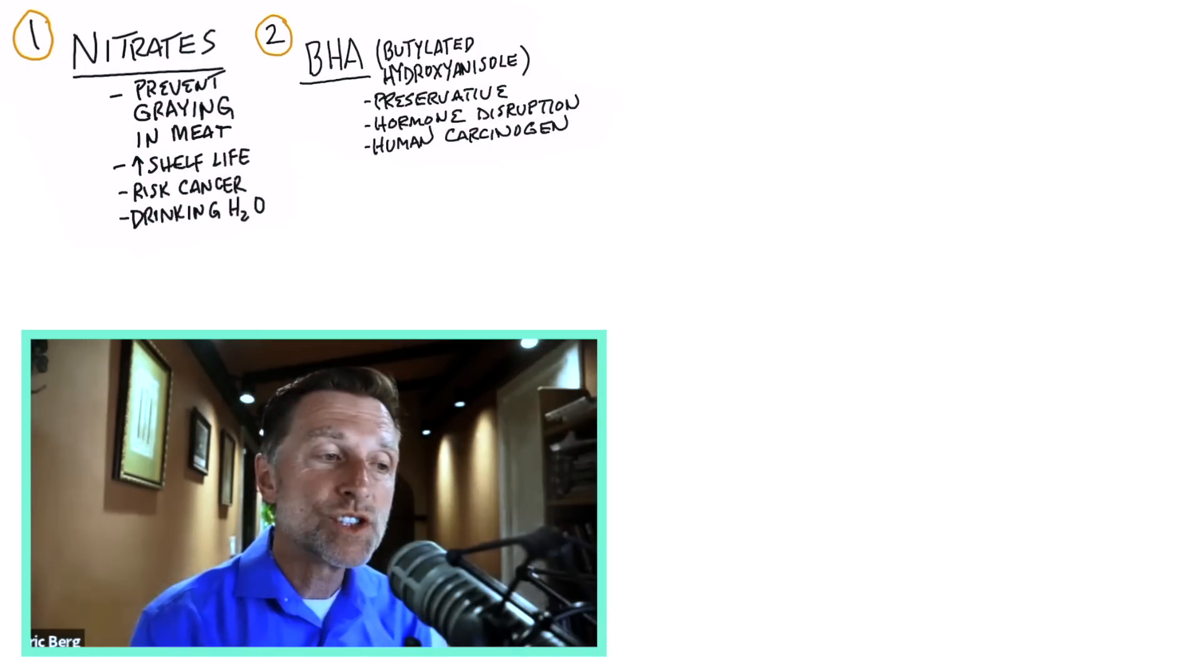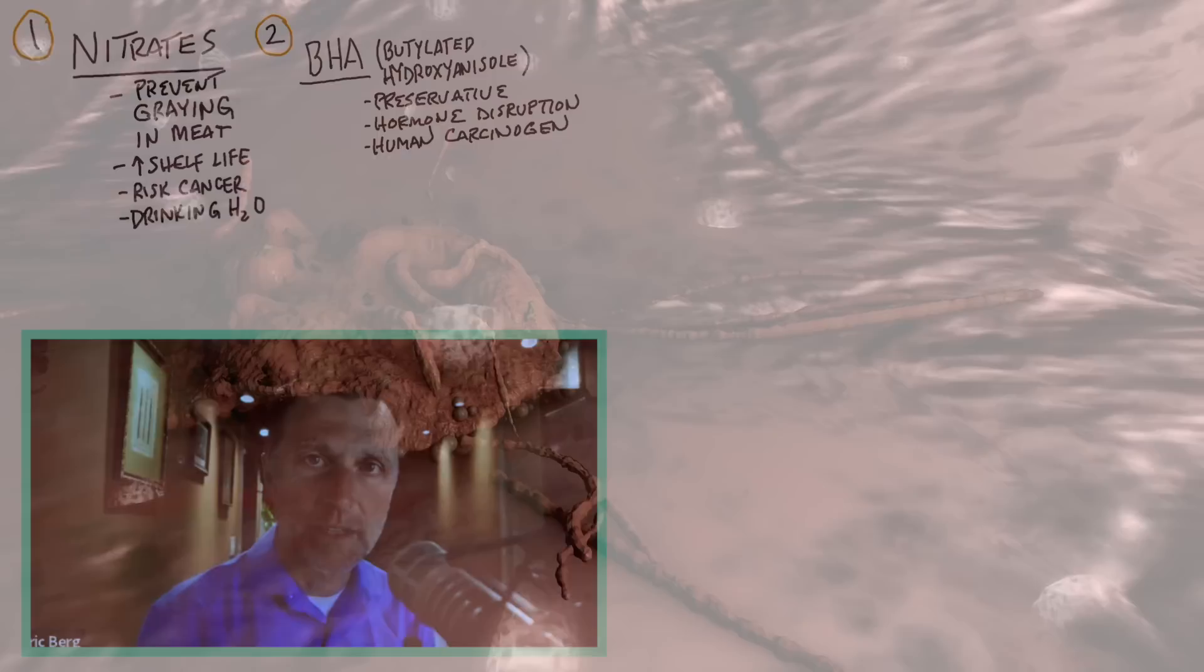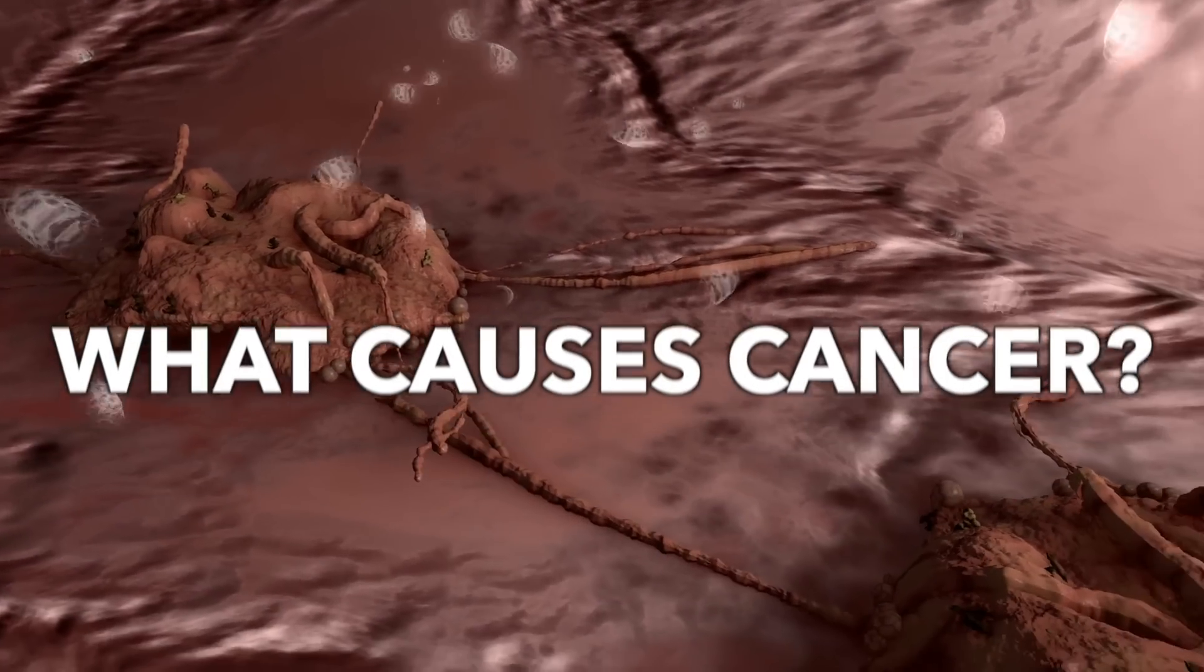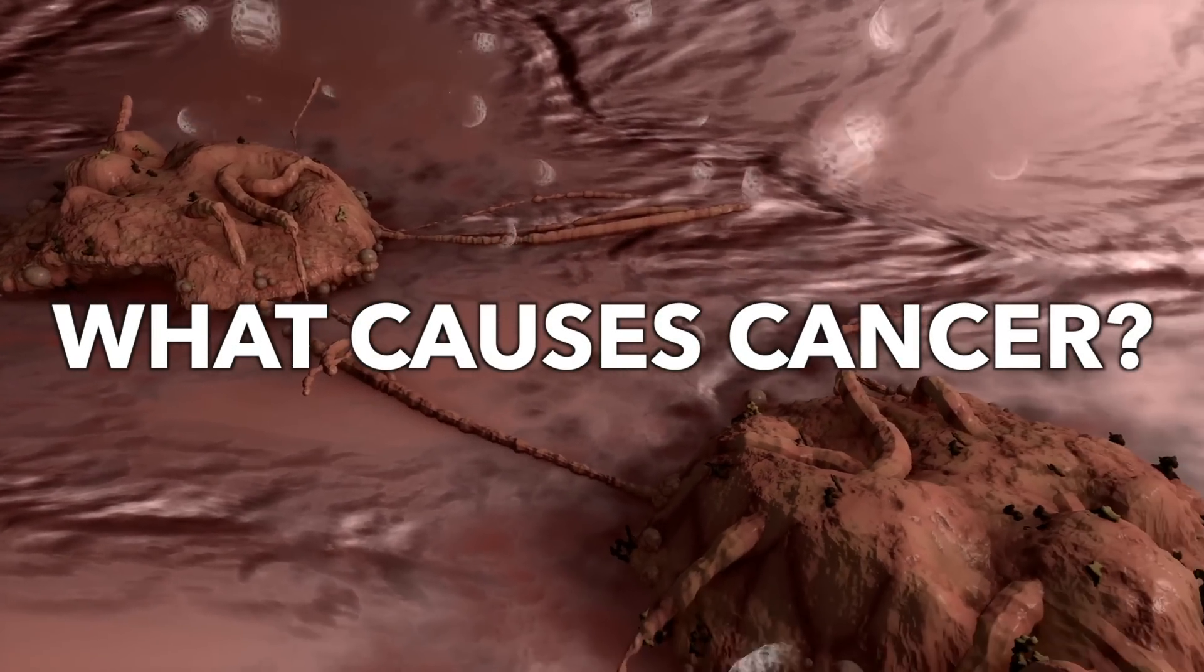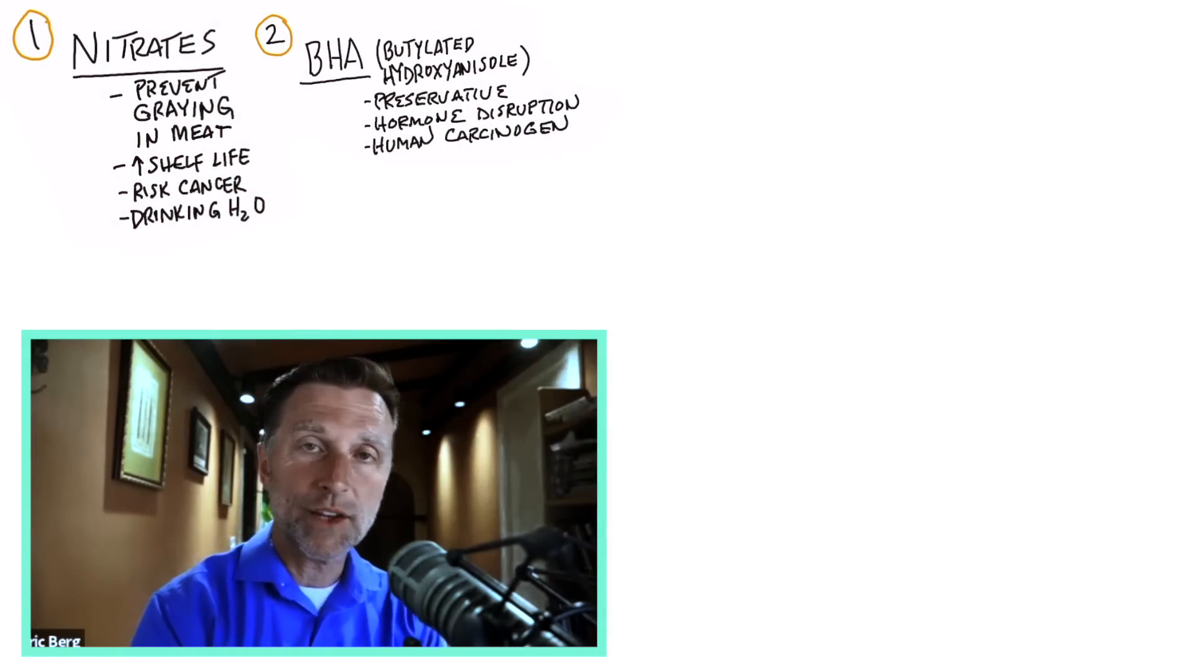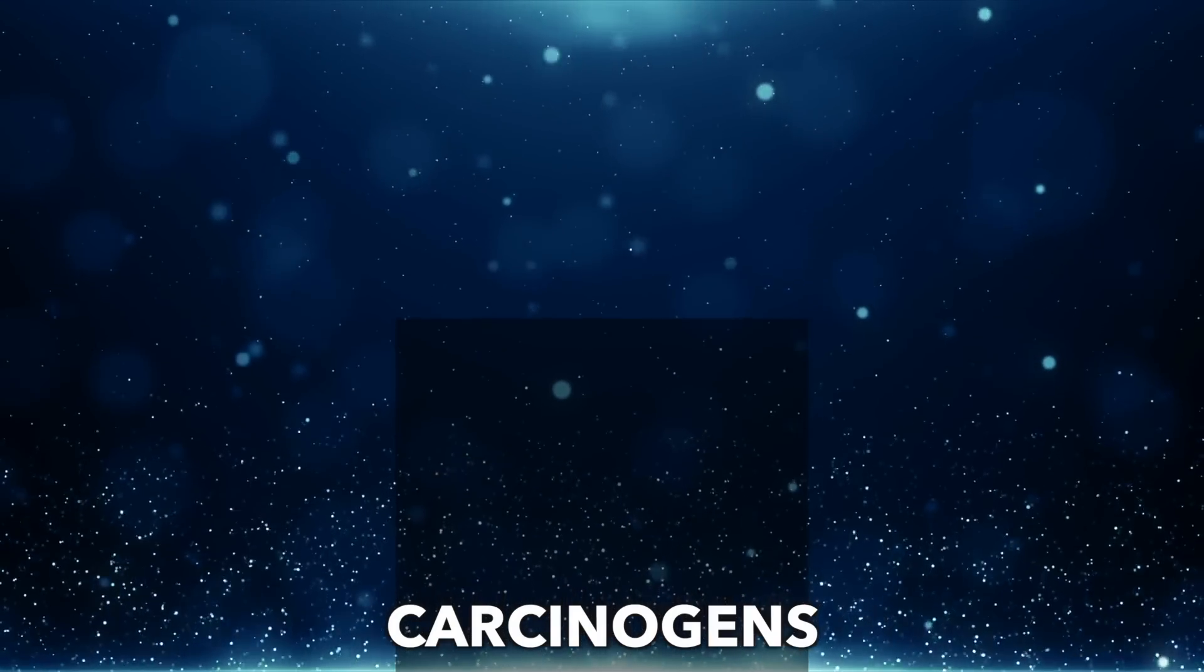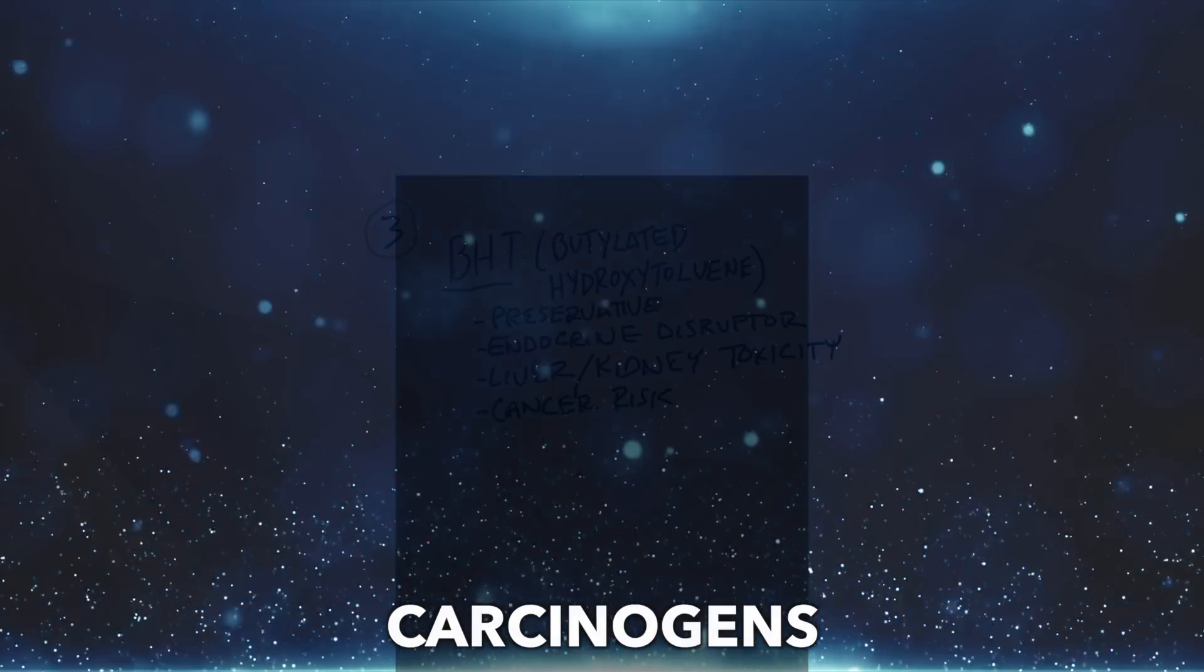Number two, BHA. This is a preservative that increases shelf life, but it's a known endocrine disruptor. It messes with your endocrine system and hormones and has been linked to cancer. It's considered a carcinogen. The accumulation of carcinogens could definitely increase your risk of getting cancer.